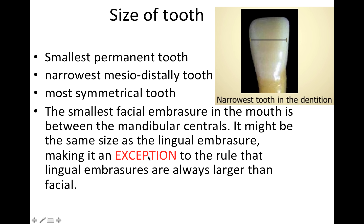Here's an exception on embrasure size: the smallest facial embrasure in the mouth is between the mandibular centrals. It might be the same size as the lingual embrasure, and that makes it an exception to the rule that lingual embrasures are always larger than the facial. Remember that the lingual embrasure is generally the largest on a tooth — well, in this case they both might be the same size.